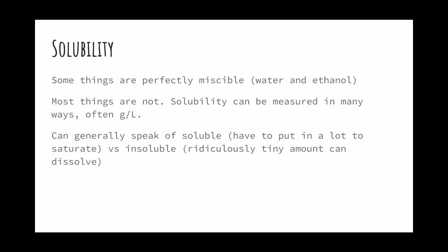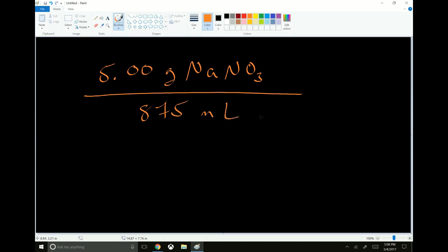But that is not always the case. It's usually not the case. And solubility can be measured in a lot of different ways, but usually it's measured in grams per liter. For example, you could dissolve, say, five grams of NaNO3, just making up a number, in 875 milliliters of water at 25 degrees Celsius.